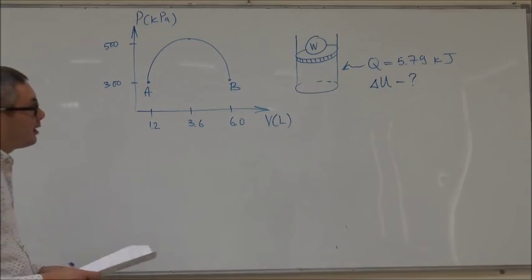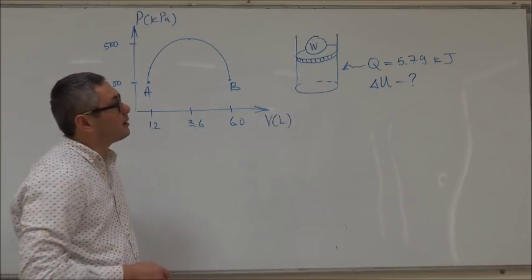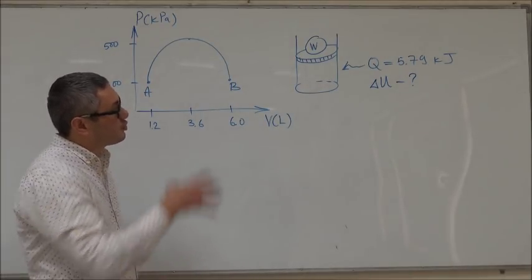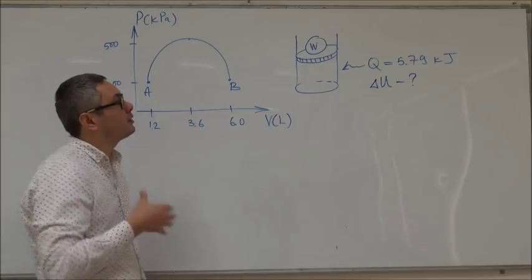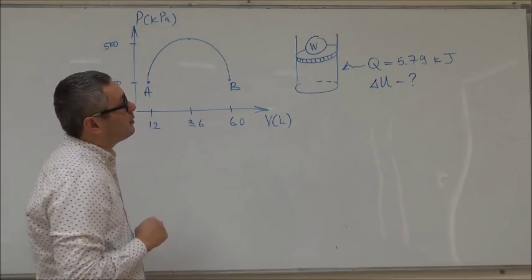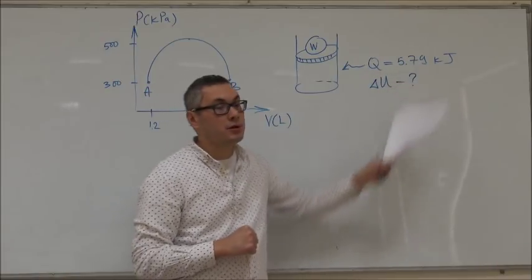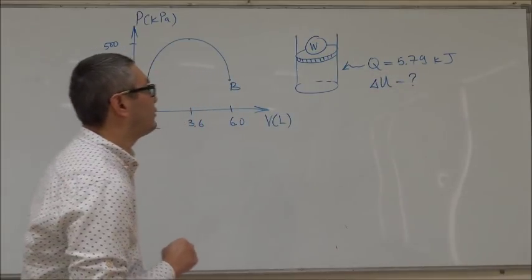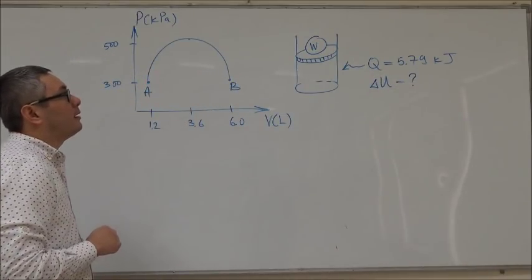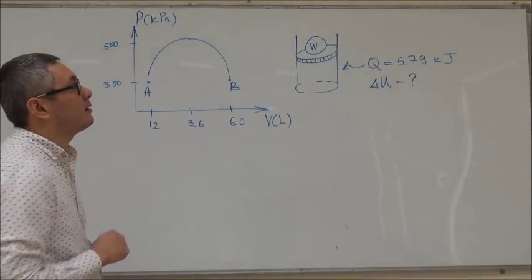In this question we are given an ideal gas inside a cylinder which is closed by a piston which is also free to slide. Then we transfer this much heat to the gas and we also adjust the weight on the piston.